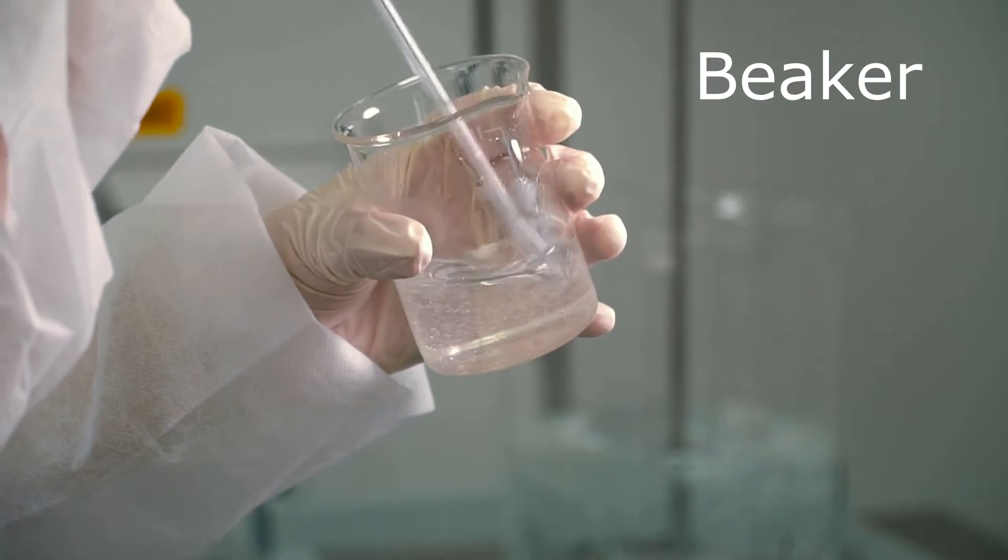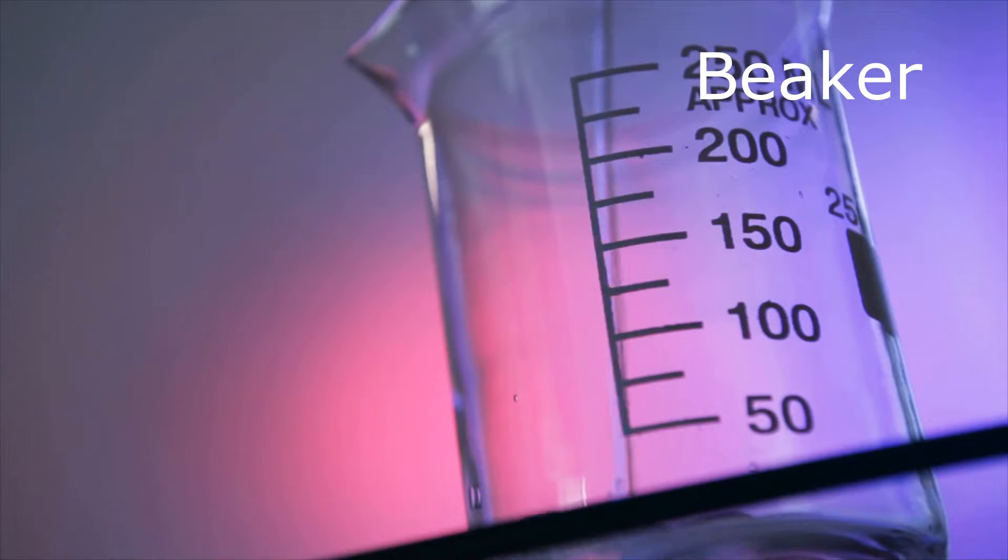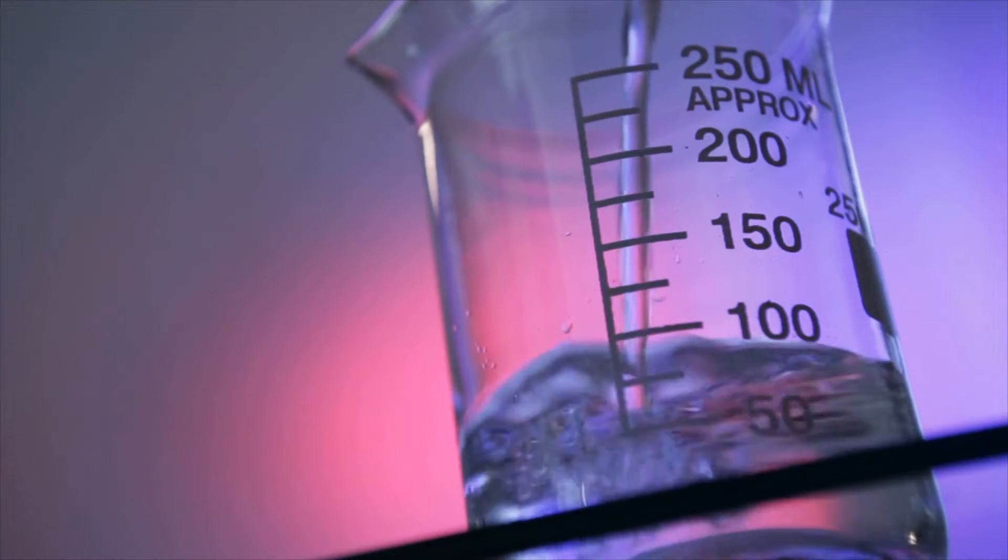Beakers are the most common type of laboratory glassware. A beaker is a glass container with a flat bottom and a small spout for pouring. They are primarily used for pouring, mixing, and measuring liquids.